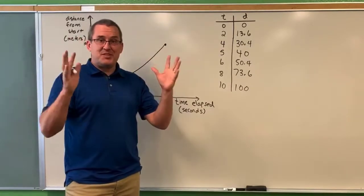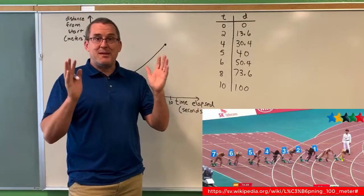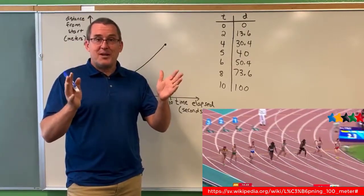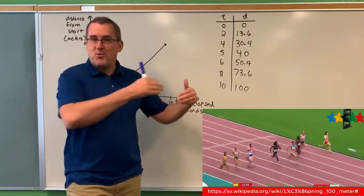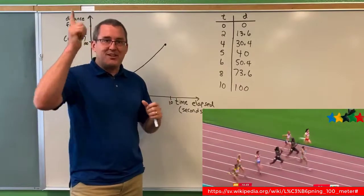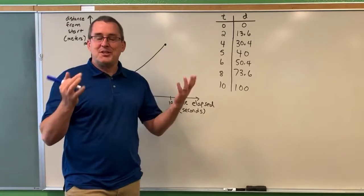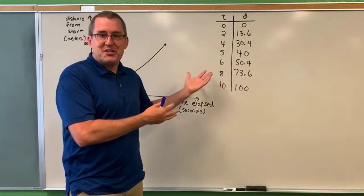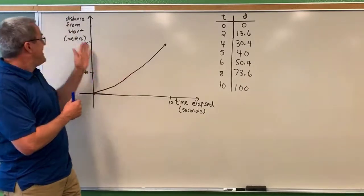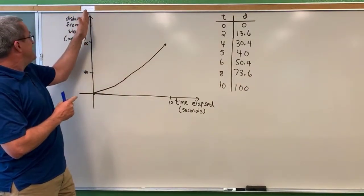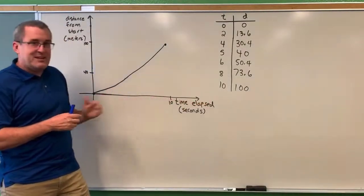But first, just to set the stage and make this come to life a little bit, I'd like you to imagine that you're watching the Olympic Games and the event is the 100 meter dash, the sprint. The runners are lined up at the starting line, the gun goes off and they sprint down towards the finish line. I've created a hypothetical situation where we'll keep track of distance from the starting line as a function of the time elapsed in the race.